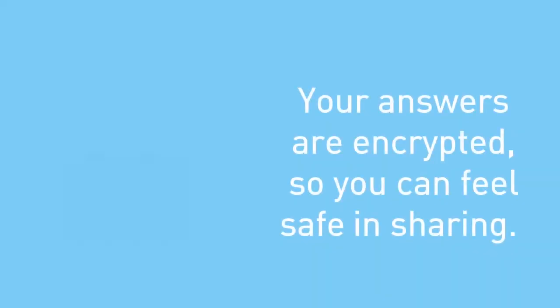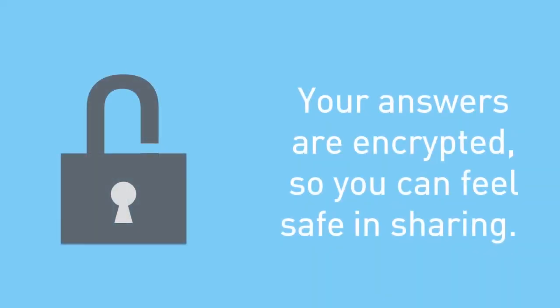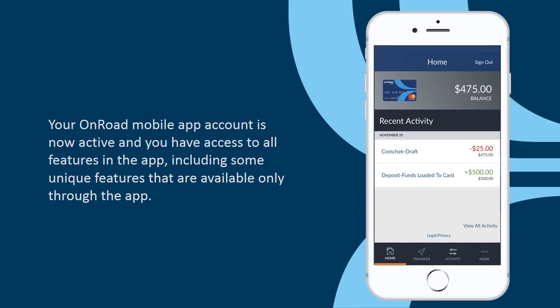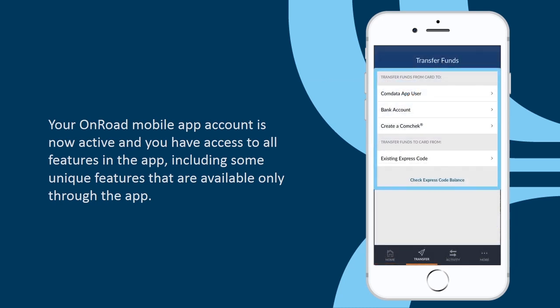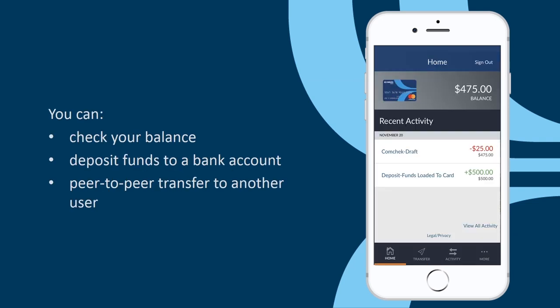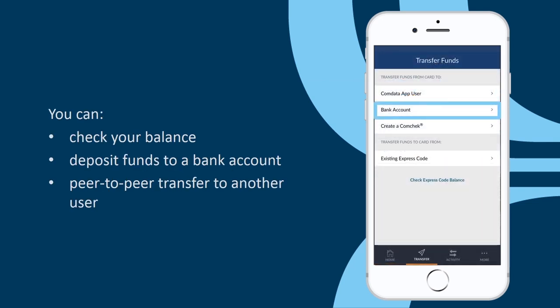Your answers are encrypted so you can feel safe in sharing. Your OnRoad mobile app account is now active and you have access to all features in the app, including some unique features that are available only through the app. You can check your balance, deposit funds to a bank account, or peer-to-peer transfer to another user.